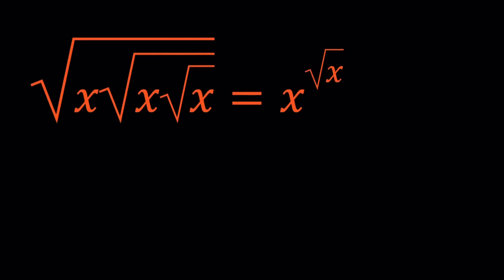Hello everyone. In this video we're going to be solving a homemade radical equation. We have the square root of x times the square root of x times the square root of x, equals x to the power square root of x. And we're looking for x values.